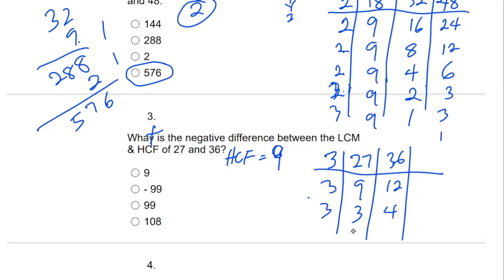We can continue. 3 can go: 1 and 4. Then 1 and 1. That means 9 times 12, which is 108. So LCM is 108. The negative difference between the two means 9 minus 108, which gives us minus 99.